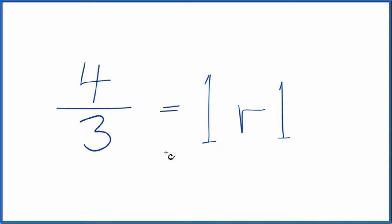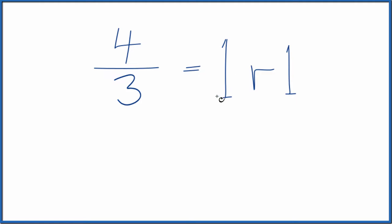Now to write four-thirds as a mixed number, here's how we do it. We take the one, that's the whole number there, and then we have the remainder, which is one, and we put that over the original denominator.